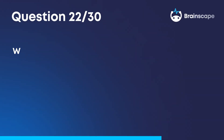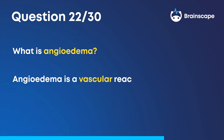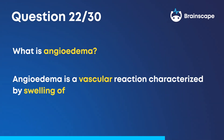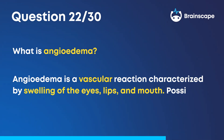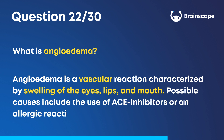Question 22. What is angioedema? Angioedema is a vascular reaction characterized by swelling of the eyes, lips, and mouth. Possible causes include the use of ACE inhibitors or an allergic reaction.